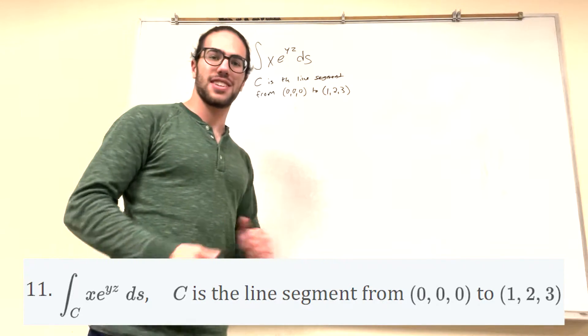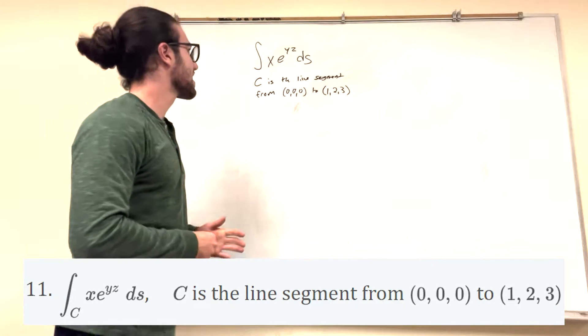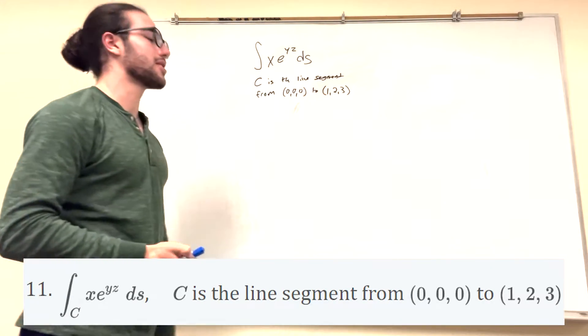What's up, CalGang? Today we have this problem, and it wants us to reparameterize. So it says the integral where c is the line segment from (0,0,0) to (1,2,3).